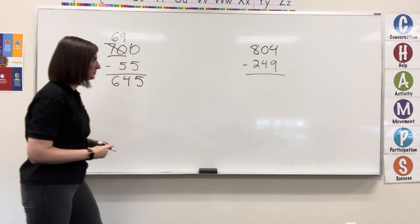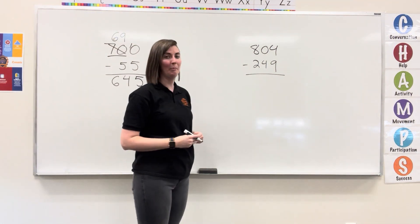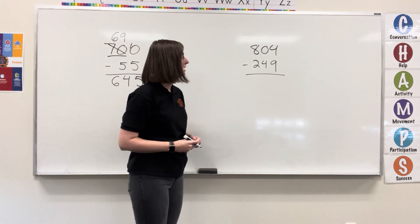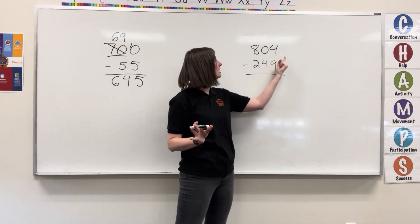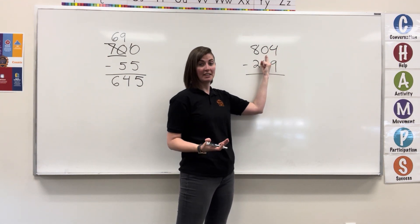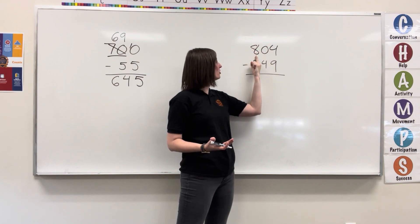Let's look at another example. Here, I have 804 minus 249. Starting in the ones, 4 minus 9. Can't do it, so I need to borrow. There's nothing to borrow from. I go all the way into 8.